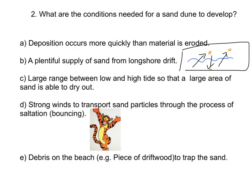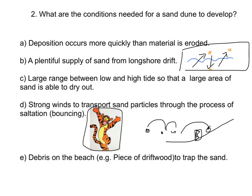Fourth, there must be strong winds to transport sand particles through the process of saltation — that's a bouncing action. A particle of sand bounces along until it finds a piece of debris on the beach and collects behind it. Fifth, there must be a piece of debris on the beach — a piece of driftwood, a can, or a rock — something the sand grains can collect behind. Make sure you have these five conditions in your notes.